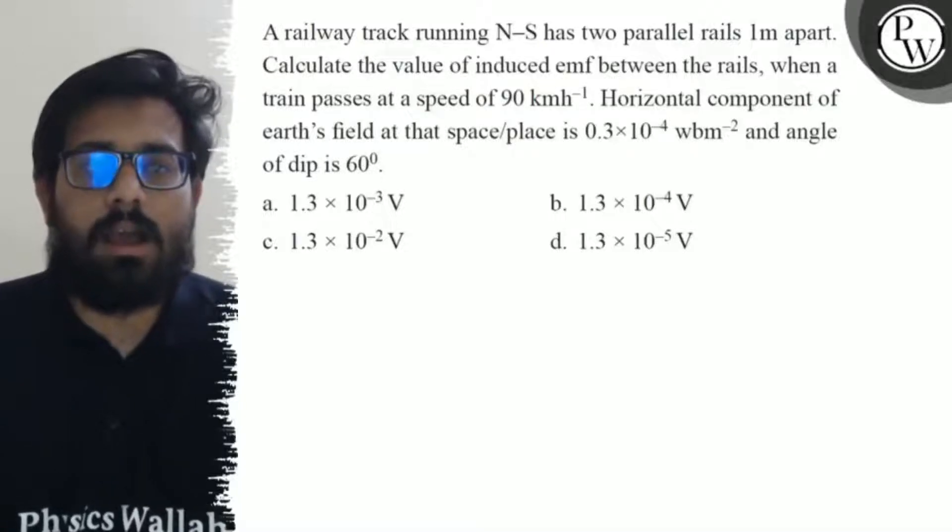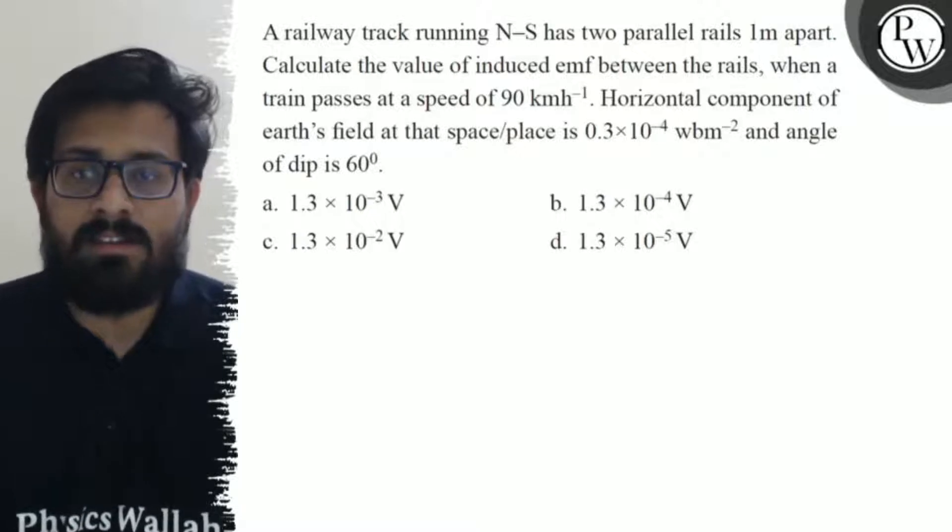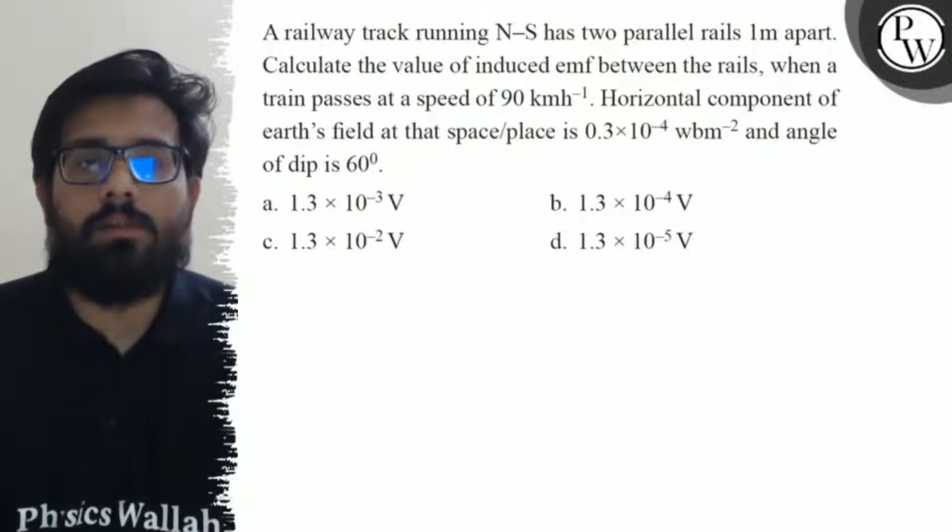Hello viewers, let's see the question. A railway track running north-south has two parallel rails one meter apart. Calculate the value of induced EMF between the rails when a train passes at a speed of 90 kilometers per hour.